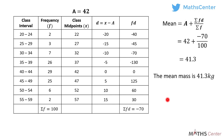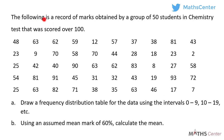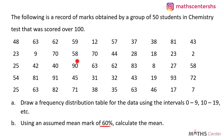Let's consider the next question. The following is a record of marks obtained by a group of 50 students in a chemistry test scored over 100. Draw a frequency distribution table for the data using the intervals 0 to 9, 10 to 19, and so on. Using an assumed mean mark of 60 percent, calculate the mean. We will use an assumed mean of 60 percent. Since we have raw data, the frequency table will include a tally column — I've explained how to do that in previous videos.